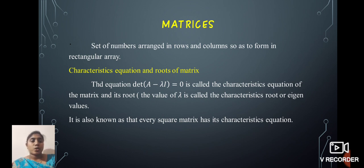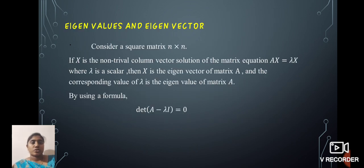Next, we define characteristic equation and root of a matrix. The equation det(A - λI) = 0 is called the characteristic equation of the matrix and its root, the value of λ, is called the characteristic root or eigenvalues. It is also known that every square matrix has its characteristic equation.